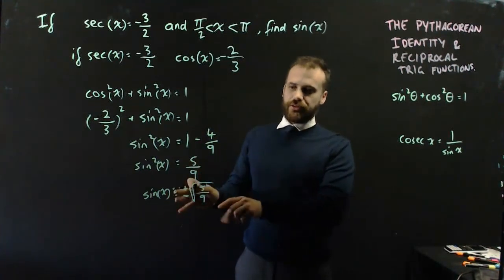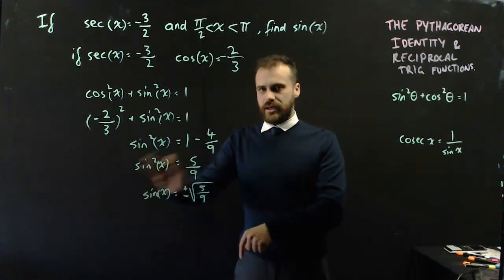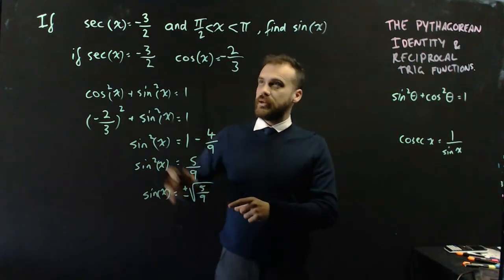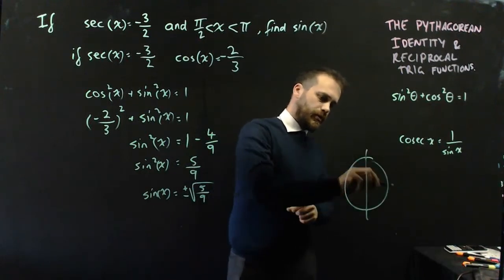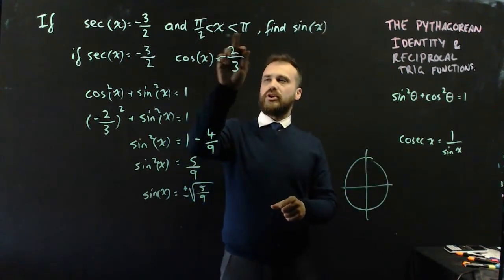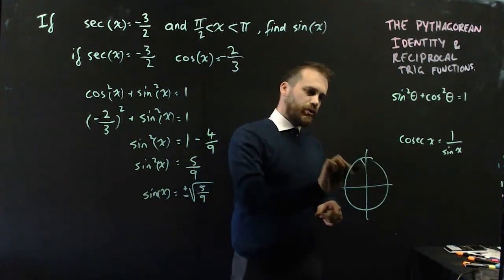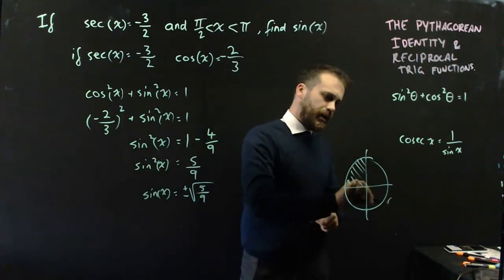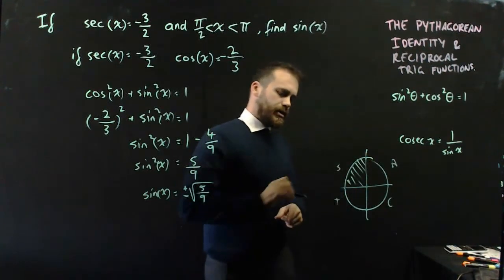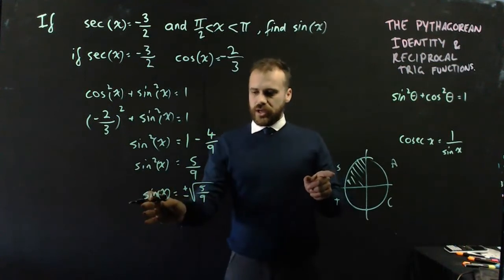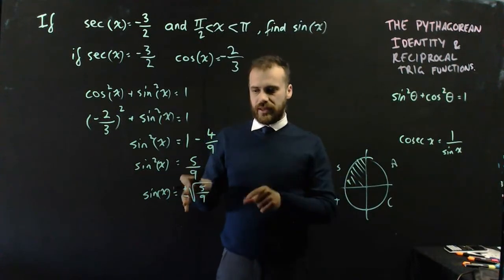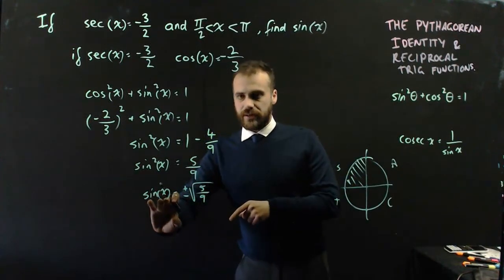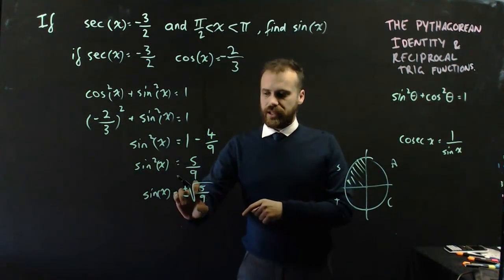And a trick for young players is stopping there, but you need to realize that we're in a certain domain. We're in between pi on 2 and pi. We're in this quadrant here. And C, A, S, T, sine of things is positive in that domain. So sine of something must be positive in that domain.